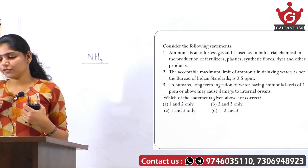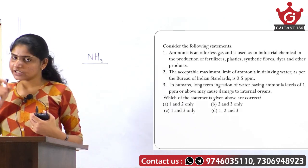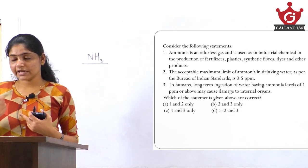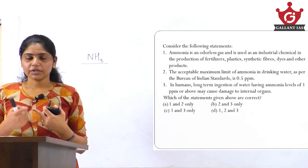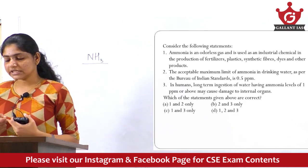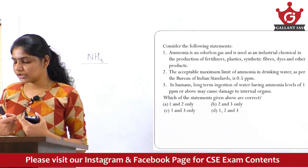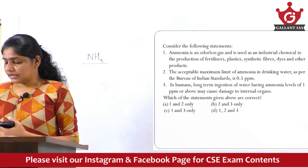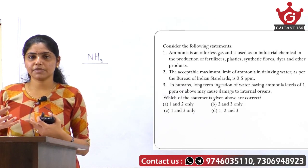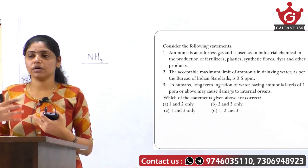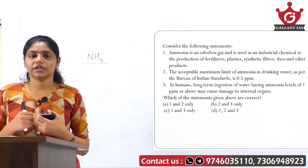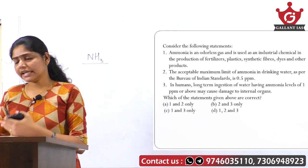In this question, statements 2 and 3 are a bit factual. Statement 2 talks about the permissible levels of ammonia in drinking water, so if you don't know that permissible level, you won't be able to say whether it's right or not. Similarly, statement 3 has a factual content regarding levels of 1 ppm or above causing damage to internal organs. If you're not aware of that, you can't confirm statement 3 either. So leave statements 2 and 3 and move on to statement 1.